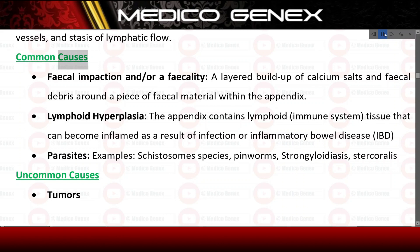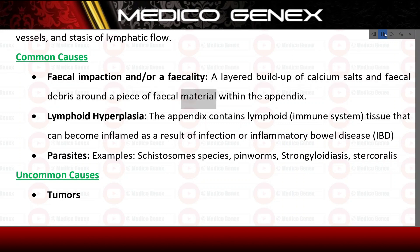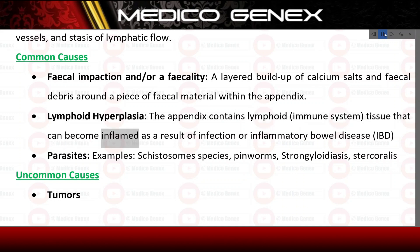Common causes. Fecal impaction and/or a fecalith — a layered buildup of calcium salts and fecal debris around a piece of fecal material within the appendix. Lymphoid hyperplasia — the appendix contains lymphoid immune system tissue that can become inflamed as a result of infection or inflammatory bowel disease.